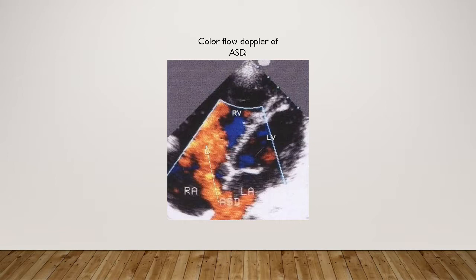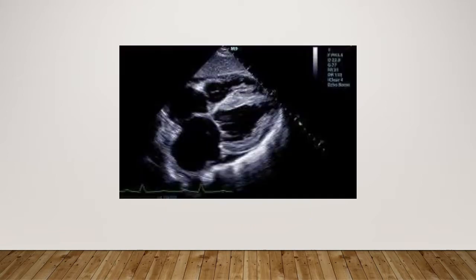Here's a color flow shot of an ASD in a modified four-chamber view, which allows better detection because the flow is more parallel to the transducer. You can see the ASD with flow going all the way up into the RV, indicating a significant amount of shunting. The right ventricle is very large, which is a sign of a significant ASD that will probably need to be surgically closed.